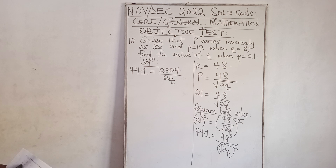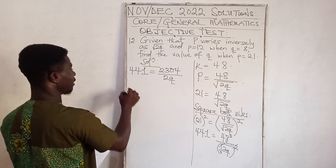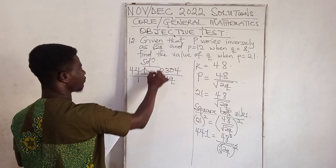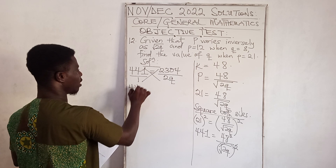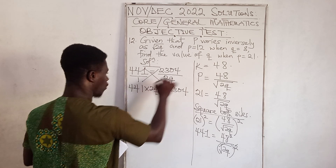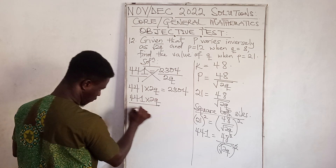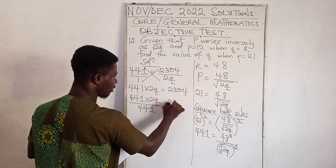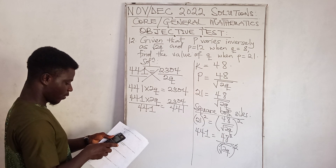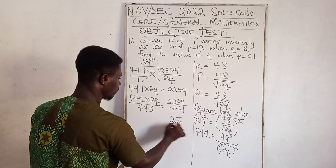Multiplying both sides by 2K gives 441 times 2K equals 2304. Dividing both sides by 441 gives 2K equals 2304 divided by 441, which simplifies to 256 over 49.